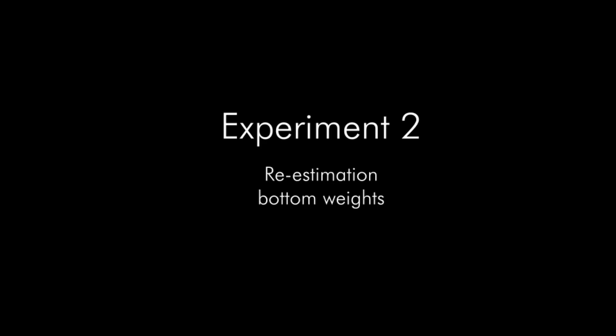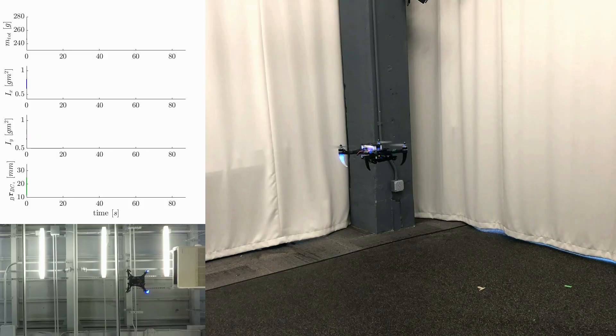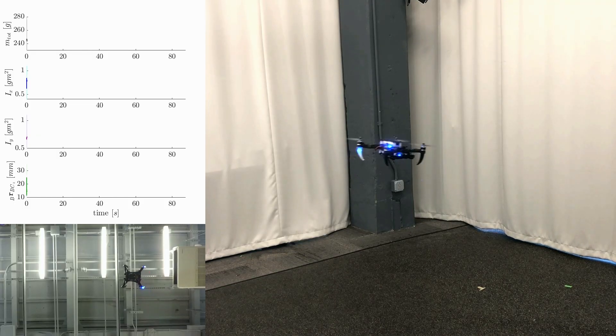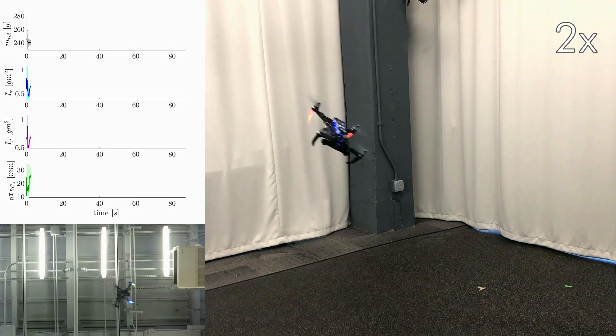We now show the estimator's ability to continuously estimate the current parameters by adding two weights consecutively at the bottom of the multirotor.